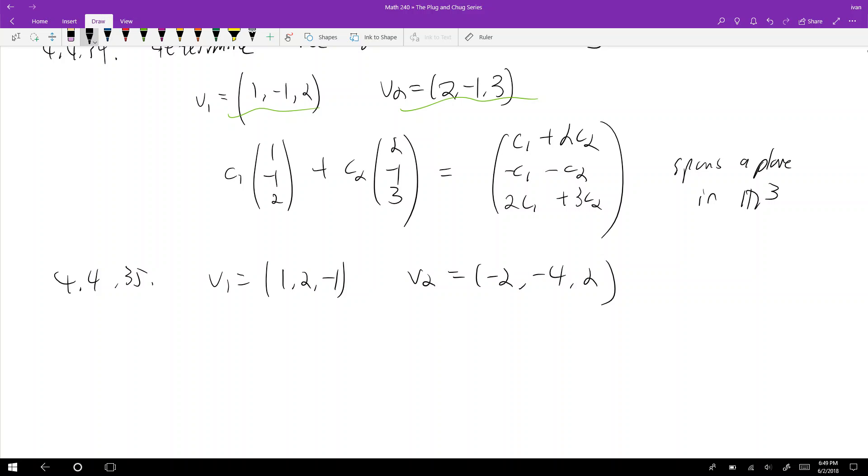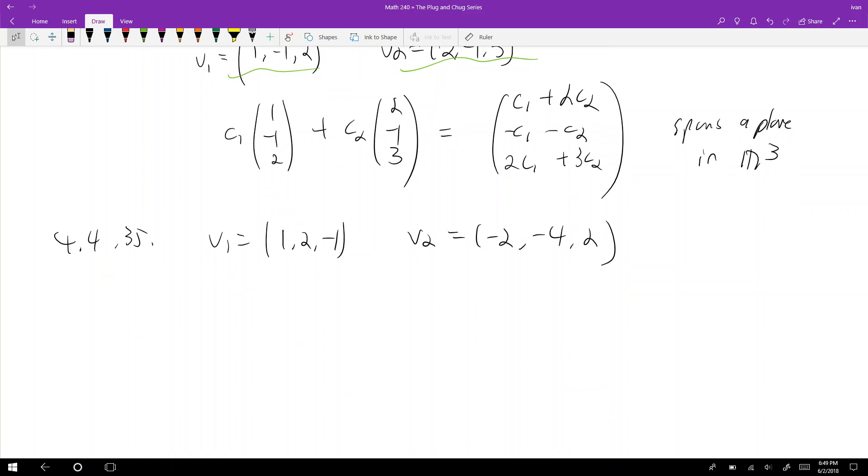And what do they span? Well, okay, if you do c1(1, 2, -1) plus c2(-2, -4, 2), all right, then you get this vector: c1 minus 2c2, 2c1 minus 4c2, and c1 plus 2c2.